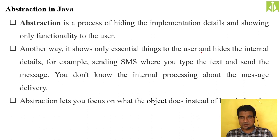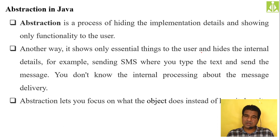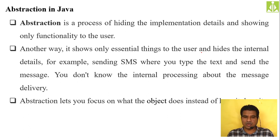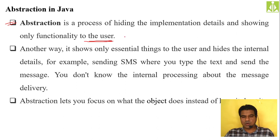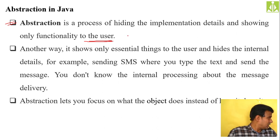Abstraction lets you focus on what the object does instead of how it does it. We create built-in class objects and call different methods, but how exactly those methods perform their operations is completely hidden. Abstraction is a process of hiding the implementation details and showing only the functionality to the end user.